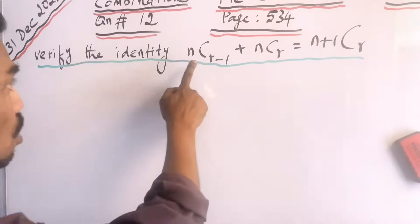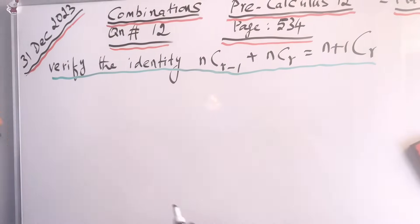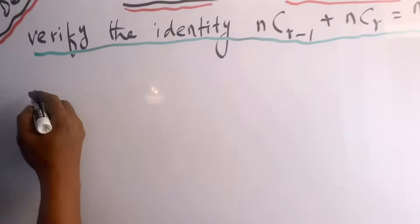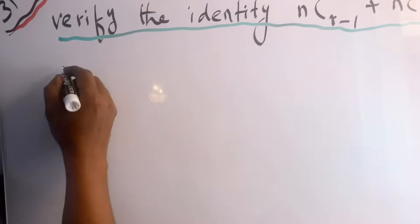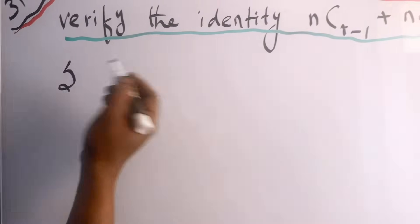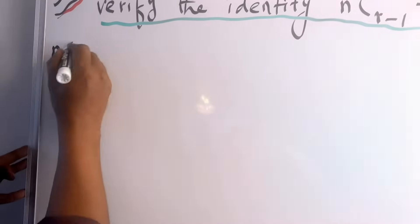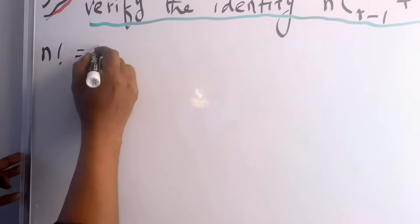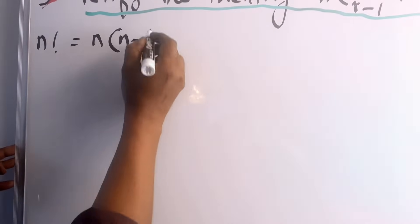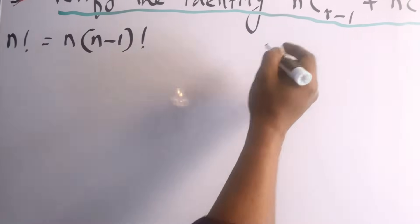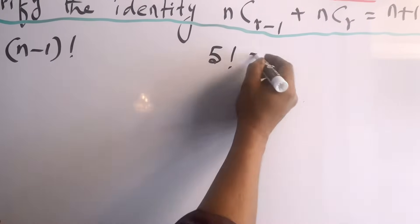C means combination. Before that I'd like to explain something about the factorial. The important formula is: n factorial can be written as n times (n-1) factorial.